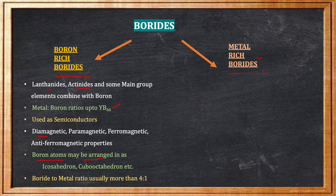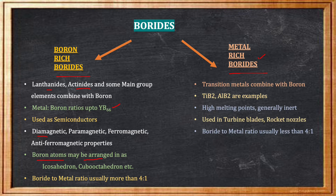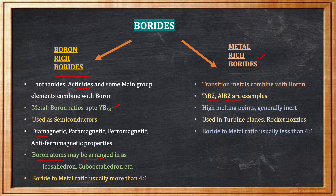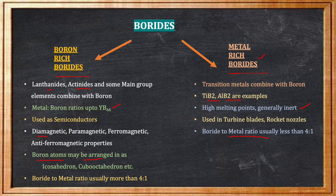In metal-rich borides, transition metals combine with boron. TiB2 and AlB2 are some examples. They have high melting points and are generally inert in nature, used in turbine blades and rocket nozzles. The boride-to-metal ratio is usually less than 4:1.